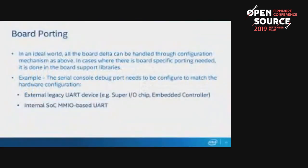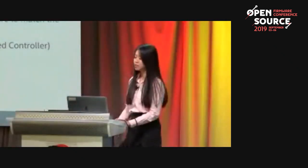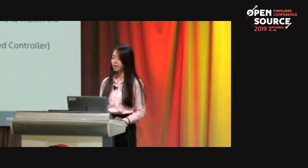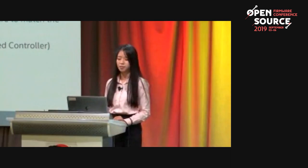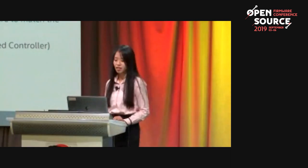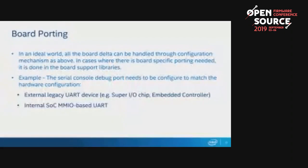Ideally, configuration can be done using the config editor tool, but there are cases where board-specific code is needed in the board support library. For example, the serial console debug port needs to be configured to match your hardware — you can use an external legacy UART device such as a Super IO chip or embedded controller, or use the Intel SOC MMIO-based UART.